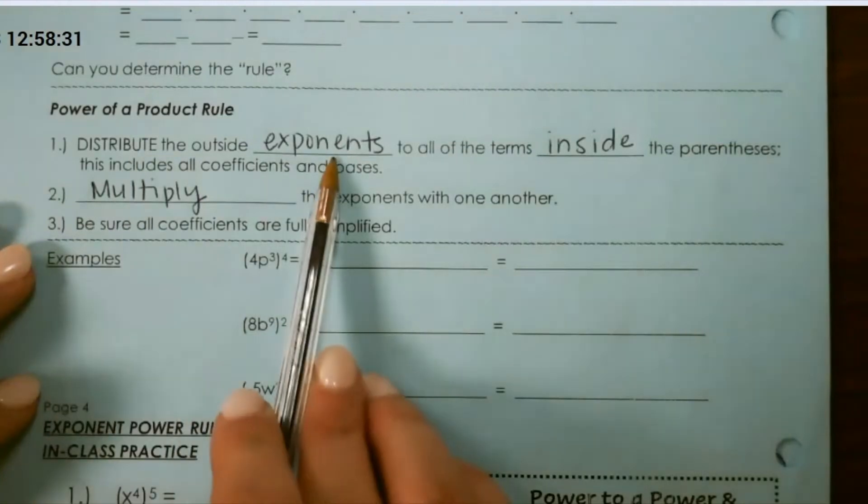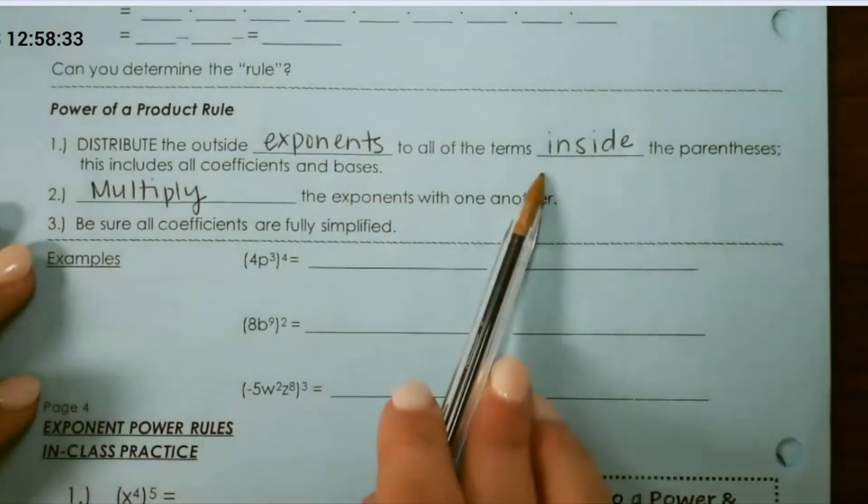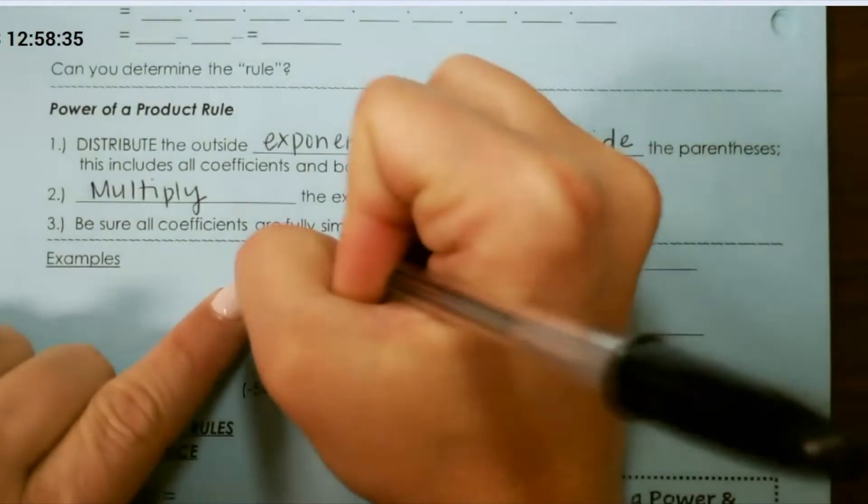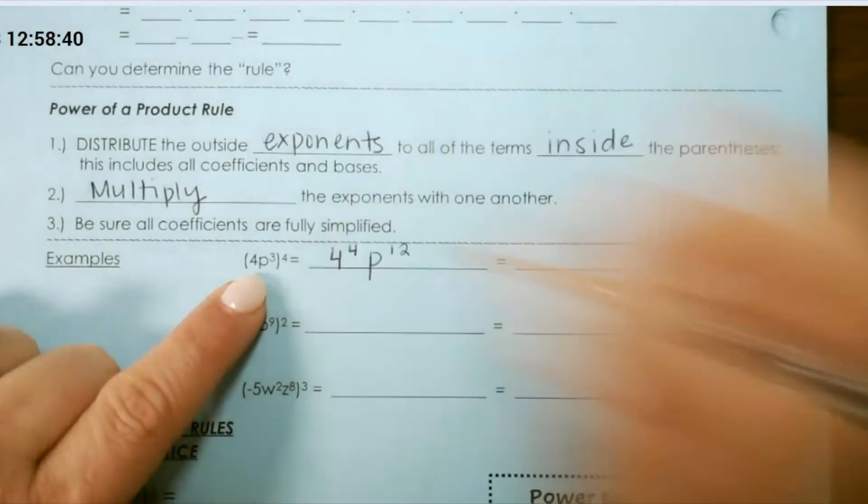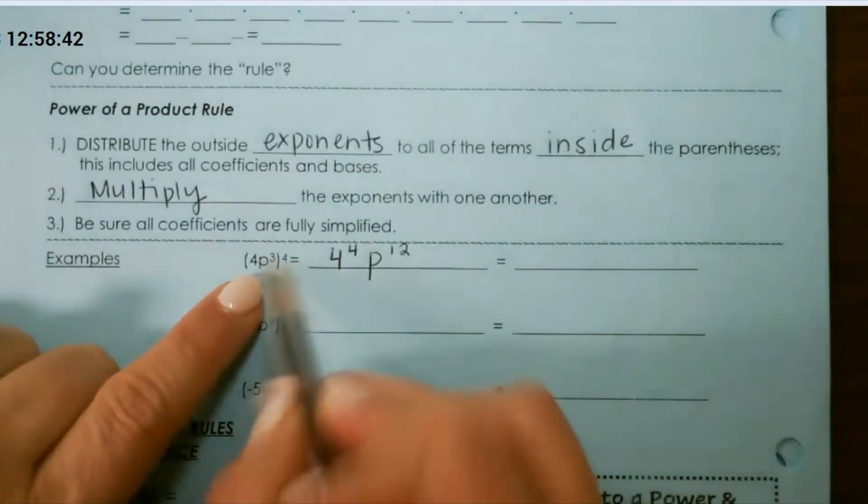We distribute the outside exponents to everything inside. This would be 4 to the fourth power and p to the twelfth power because we multiply these together.